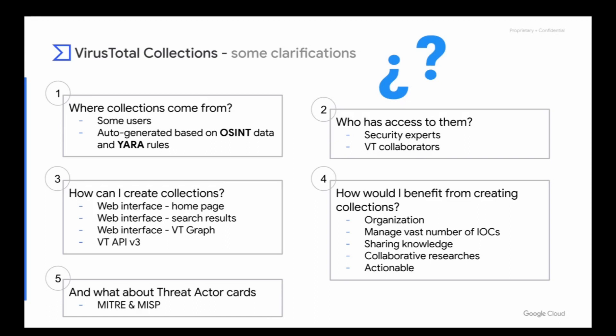Next: how would I benefit from creating collections? The main benefits are that you can better organize your IOCs and it allows you to work with massive amounts of indicators. Everything is actionable — you can click everywhere and relationships are shown to you. You can also share your findings with your team and work in a collaborative way. Regarding threat actors, there is no way to manually create a threat actor card. From VT, we map threat actors based on industry standards such as MITRE and MISP.